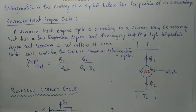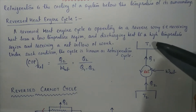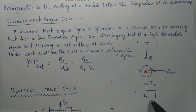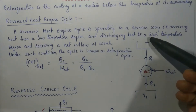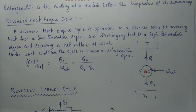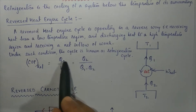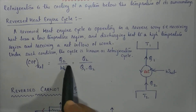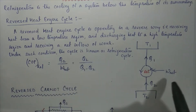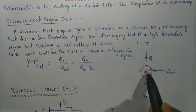In the case of a heat engine, the flow of energy takes place from a higher energy reservoir to a lower energy reservoir. But in the case of a reverse heat engine, the flow of energy takes place from a lower energy reservoir to a higher energy reservoir. The performance of the reverse heat engine is measured in terms of the coefficient of performance (COP), which equals the desired effect divided by the net work input.